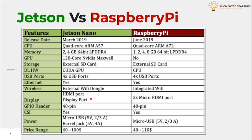The 40-pin header for general purpose input/output is available in both modules to connect any external device. The Jetson has two power options: one via a micro USB port like the Raspberry Pi, and an additional barrel jack for high power input. While running machine learning models, the Jetson may require more power than a micro USB port can provide, so in that case you would connect the barrel jack. The Jetson Nano is available for between $60 to $100 depending on whether it's the 2GB or 4GB variant.